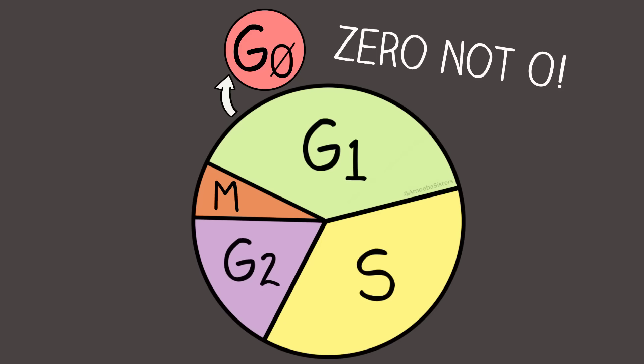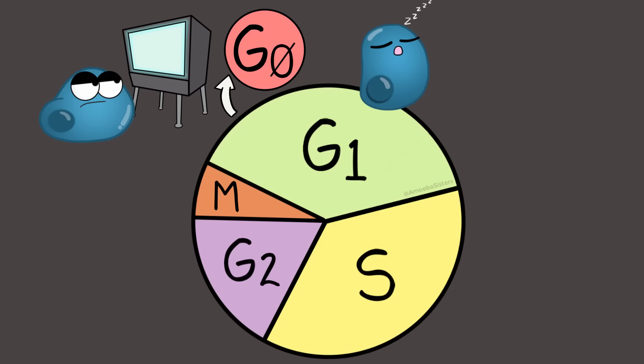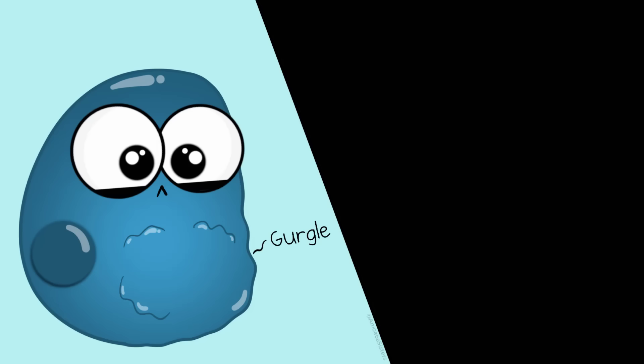G0 is a resting phase. Now cells here are still performing cell functions, but they're not preparing to divide. Some cells go here temporarily—maybe if there's not enough resources around, for example.